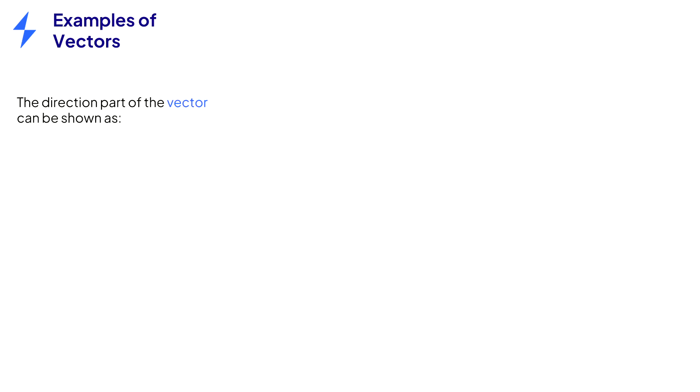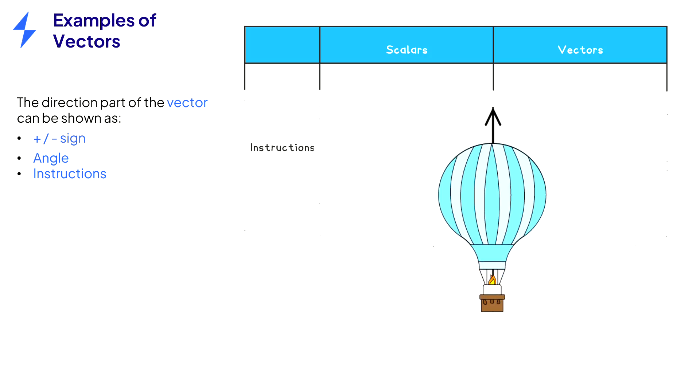A quantity is also a vector when the direction part is explained with instructions. In this example, the balloon is traveling at a speed of 200 meters per second. But as a vector, we can say that the velocity is 200 meters per second upwards. Think about the words used in a question and what this means.